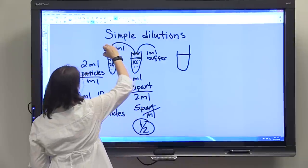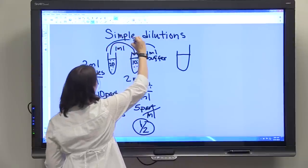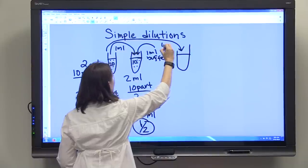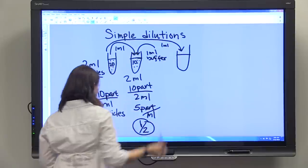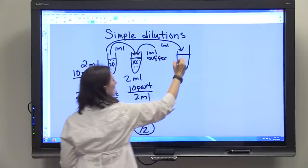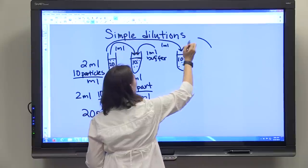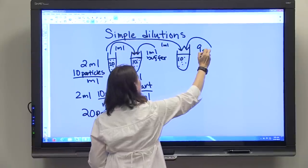So, say we took another ml from this first original solution and put it in this test tube. Again, we're transferring 10 particles, but if we put in 9 ml's of buffer here,